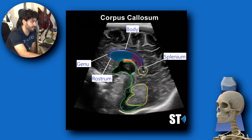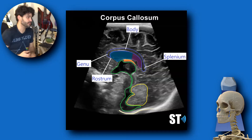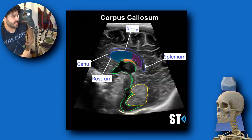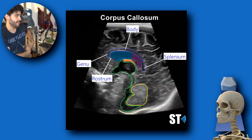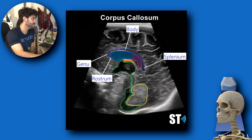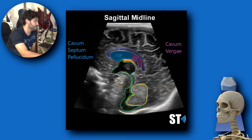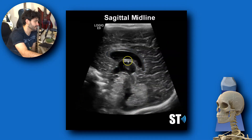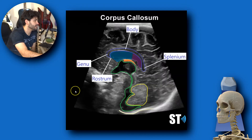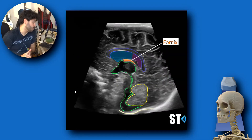I remember splenium because it's towards the back of the corpus callosum, like the spleen — when you're scanning the patient's left side, you're usually going to get the spleen closer to the back. So: splenium, back, spleen. This here is the fornix — that's the fornix labeled in orange.